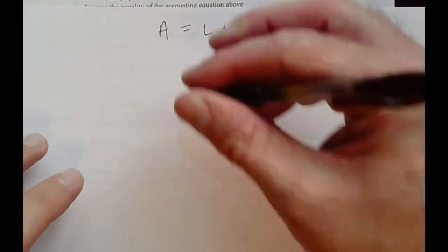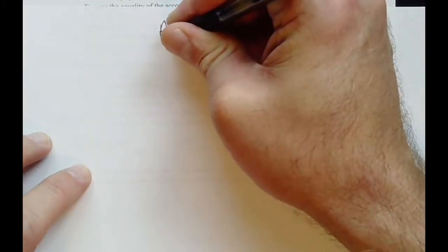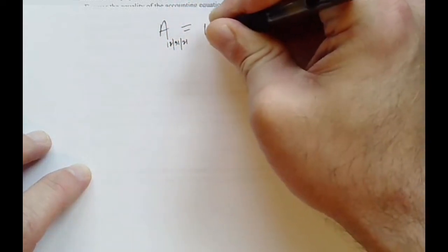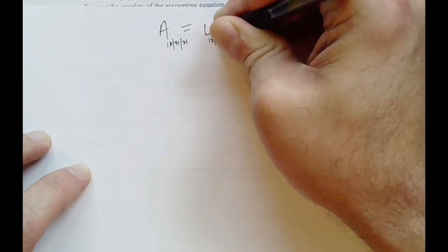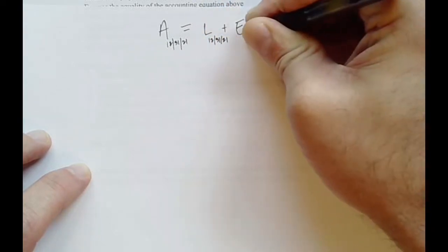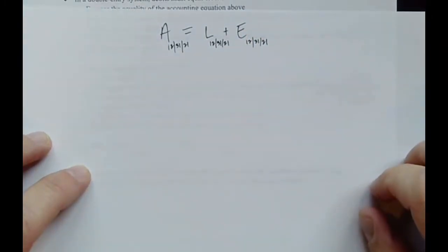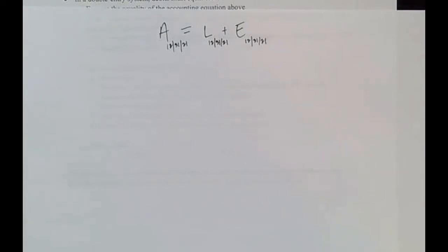One thing we need to be very particular about is that this is only true at a moment in time. So I'm going to establish our time as December 31st, 2021 for each of these items. These are the things that I find on a balance sheet, and a balance sheet is at a moment in time. So this equation will only hold true if we assess each of its components at the same time.